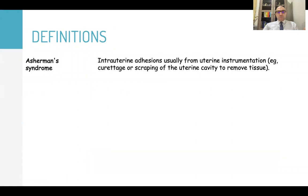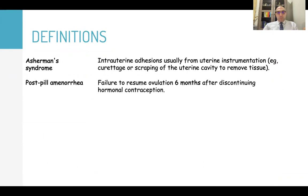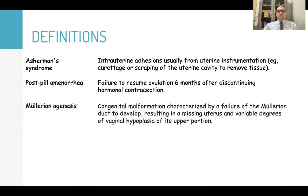Asherman's syndrome is intrauterine adhesions usually from uterine instrumentation like curettage or scraping of the uterine cavity to remove tissues. Post-pill amenorrhea is failure to resume ovulation six months after discontinuing hormonal contraception. Mullerian agenesis is a congenital malformation characterized by failure of the Mullerian duct to develop, resulting in a missing uterus and variable degree of vaginal hypoplasia of its upper portion.